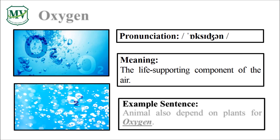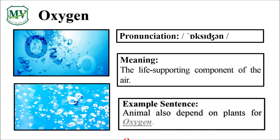Please repeat the word after me. Oxygen. Good job! Let's spell it. O-X-Y-G-E-N. Oxygen. Great! Animals also depend on plants for oxygen. Can you try reading the sentence on your own?